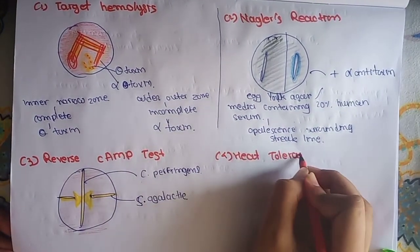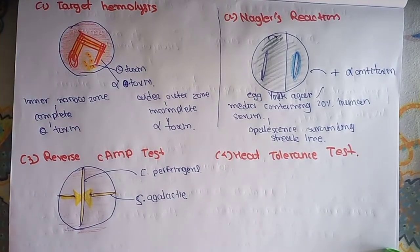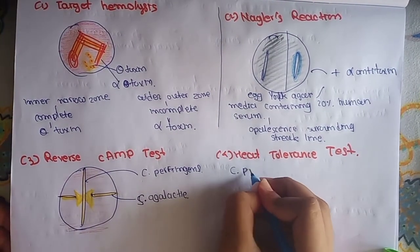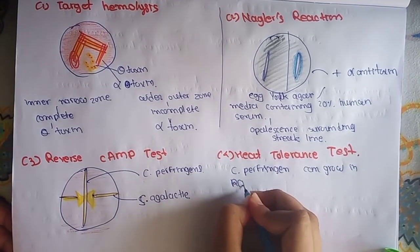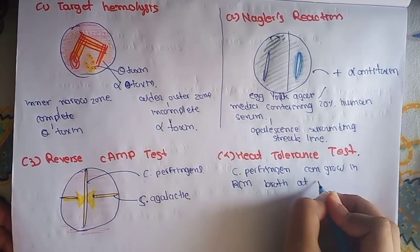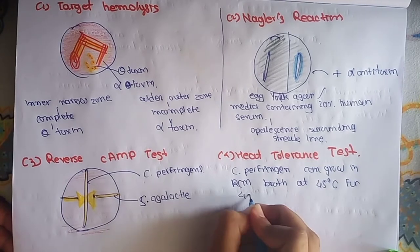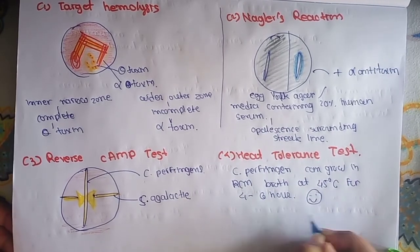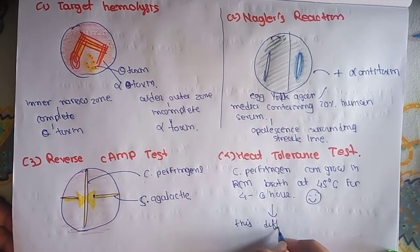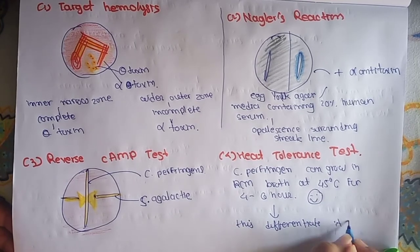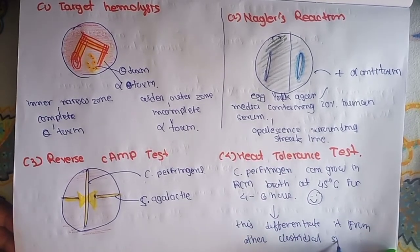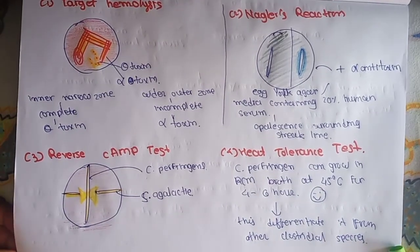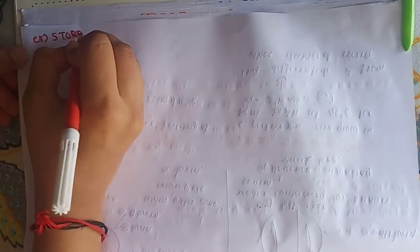Now the fourth method is heat tolerance test. Clostridium perfringens can grow in RCM broth at 45 degrees Celsius for 4 to 6 hours. It is heat tolerant and this property differentiates it from the other Clostridium species.